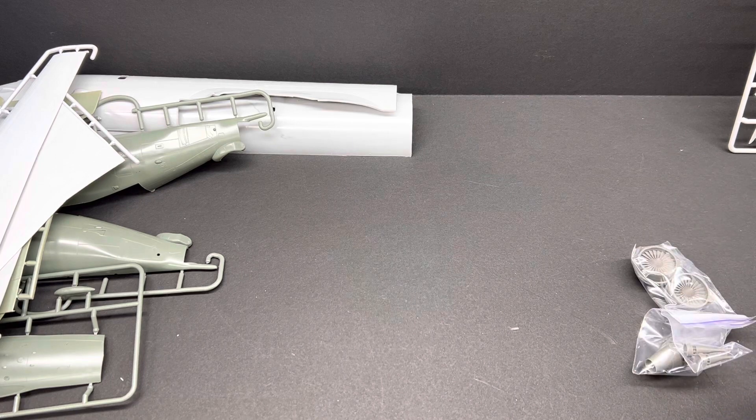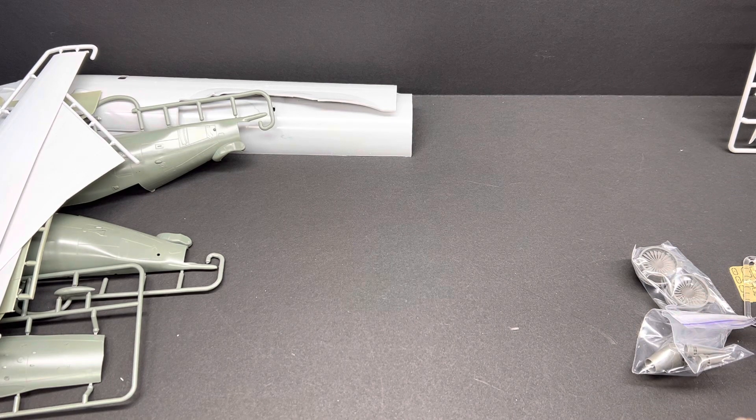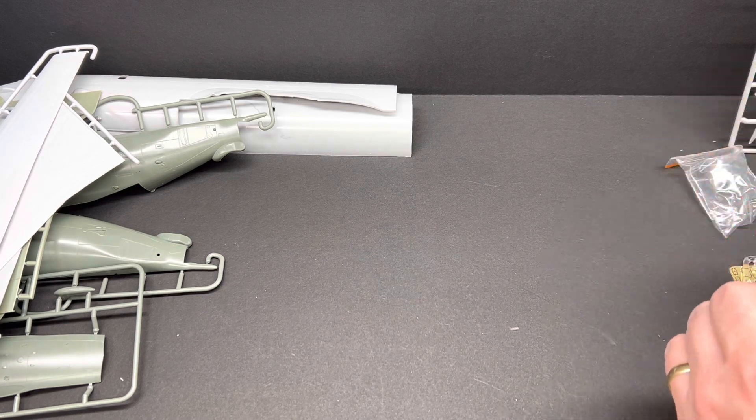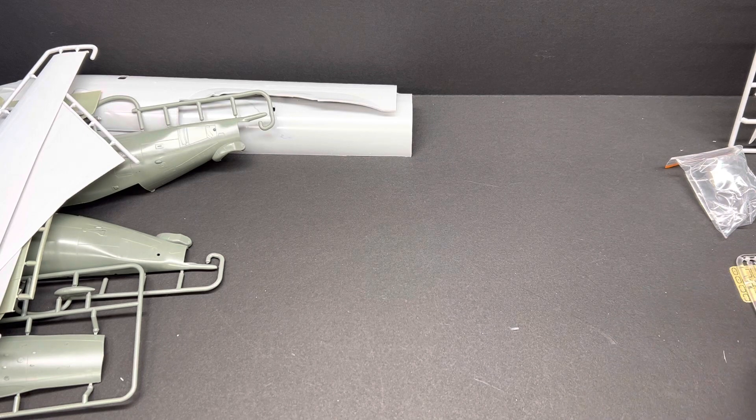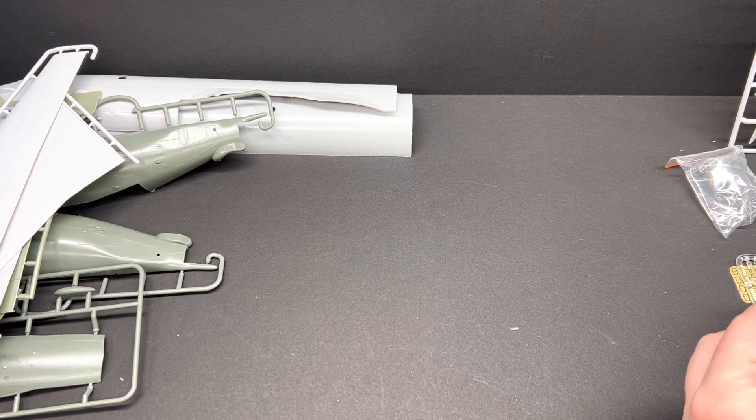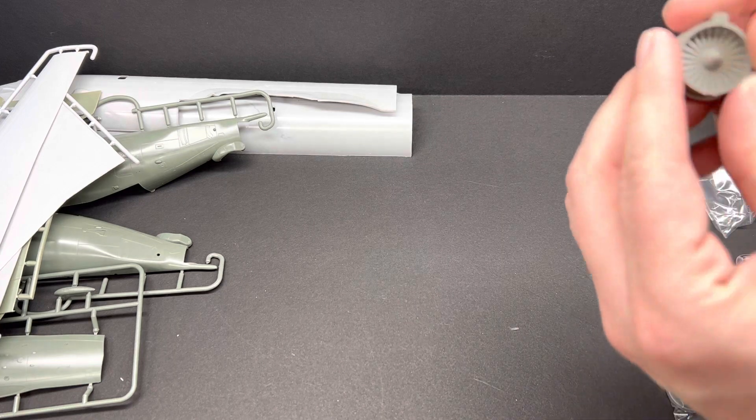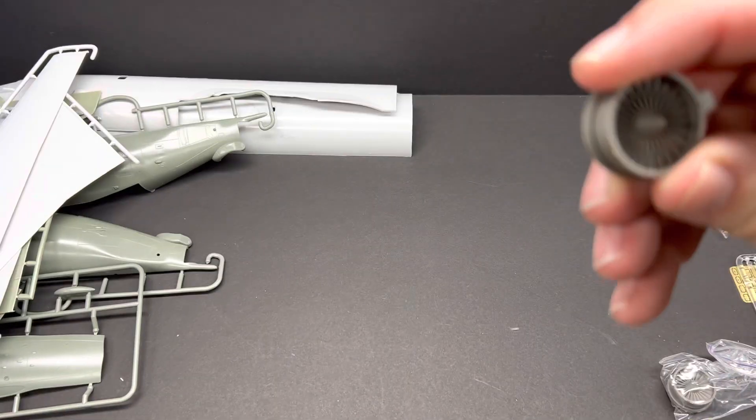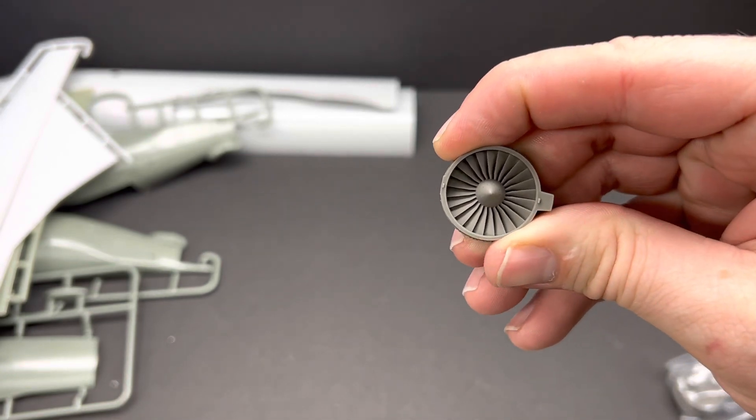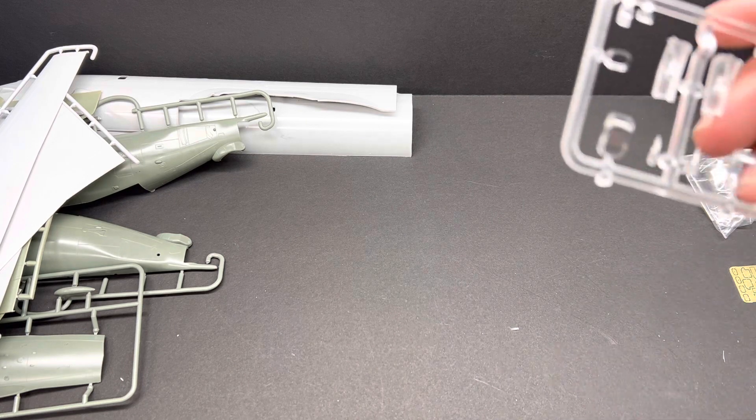All right. Now, we got this nice little box of resin and photo etch inside of here. I told you. This one's gonna go a long one. All right. So, we have engine fans that are in resin. Breaking a bag out here. And, for some reason, it's not wanting to come out. Those fans are really nice. Yeah. Good stuff there. That is wonderful.